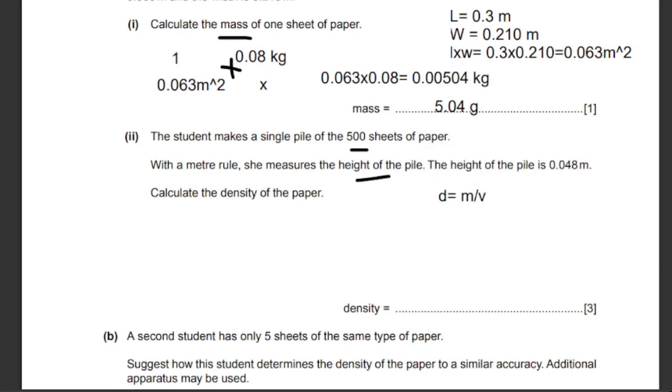In this case, we already have the mass. We just need to figure out the volume. Volume equals length times width times height. In this case, since it's a rectangular paper, we already have the height, but we have the height of the whole pile. We just need the height of one paper.